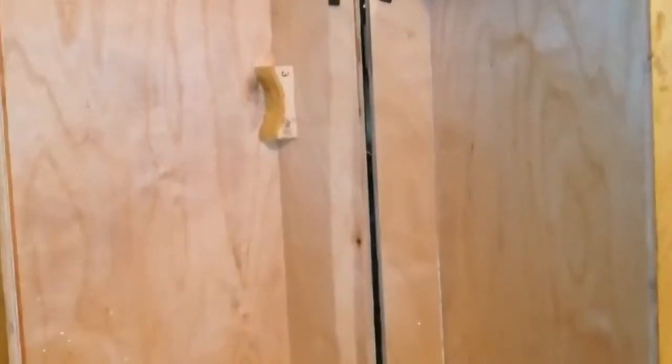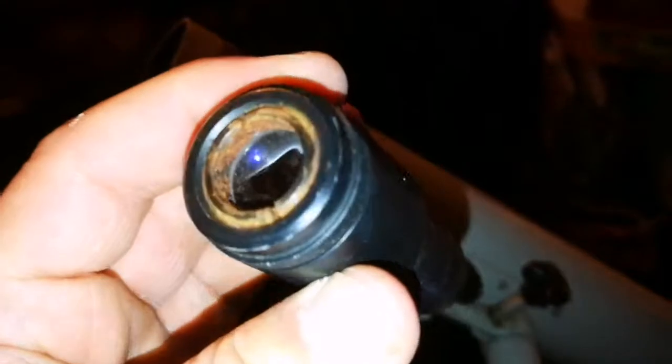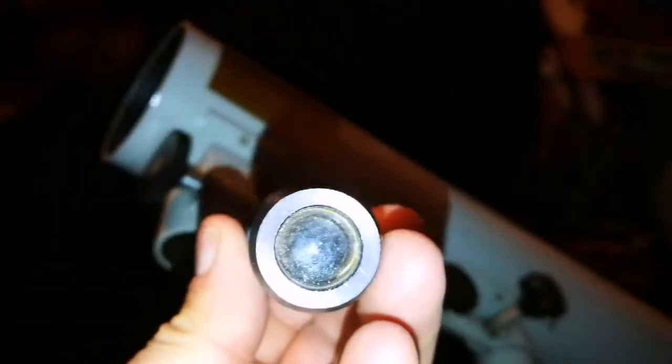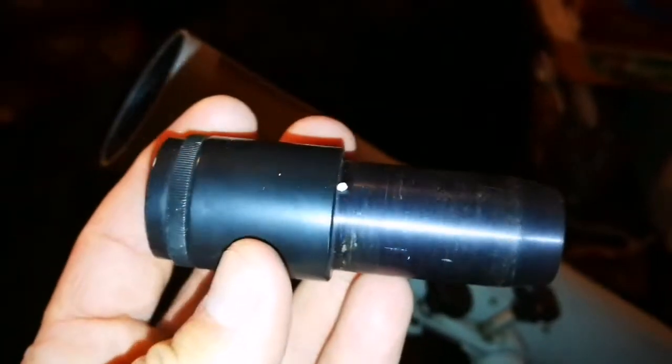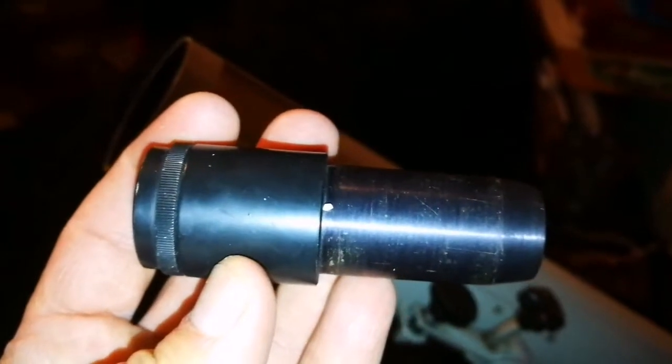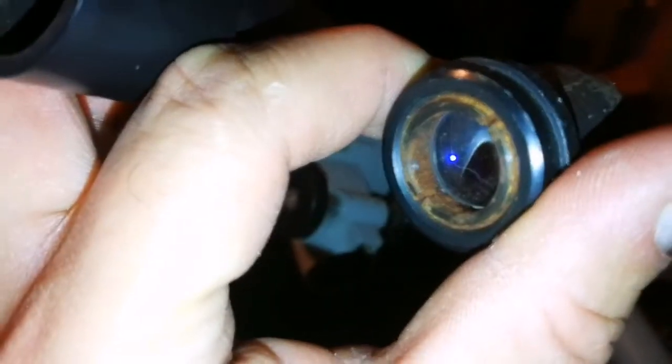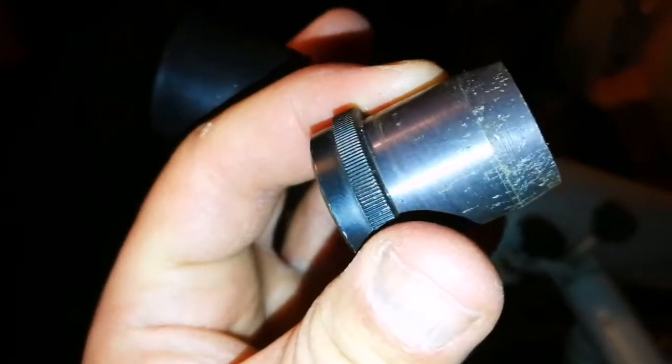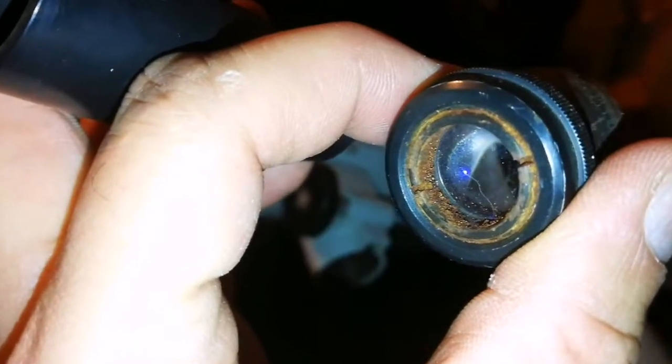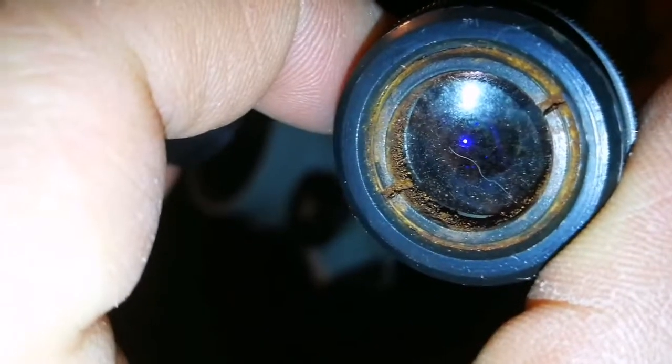So that was unboxing. Can confirm that this is an eyepiece and a Barlow attached together, so I have to unscrew this. Okay, that's the Barlow and that's the eyepiece. Needs cleaning, of course. It's almost like a microscope eyepiece. I have to clean it carefully. It has been used, it seems, for fishing or somewhere, for hunting.